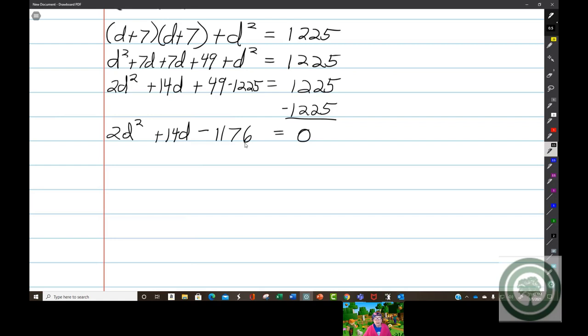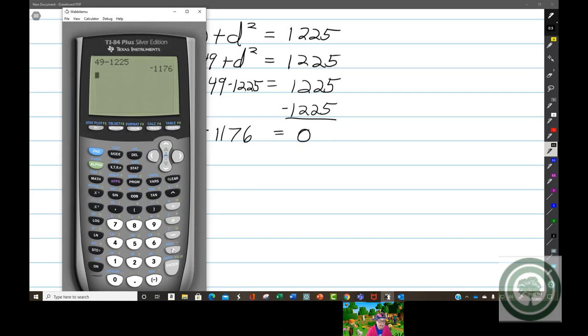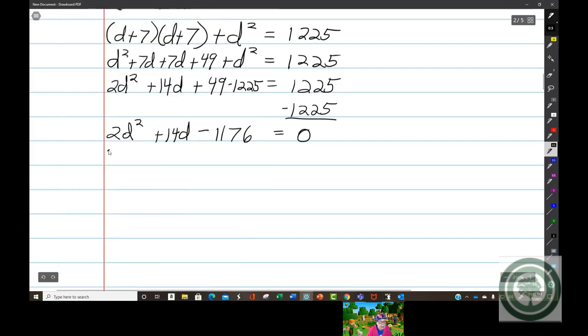Now, 2 will go into each of these numbers. I know 2 goes into 14, and this number ends in a 6, so 2 goes into 6, which means 2 will go into the entire number. Negative 1176 divided by 2 is negative 588.